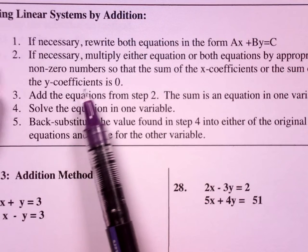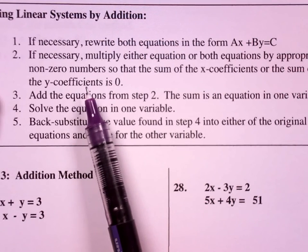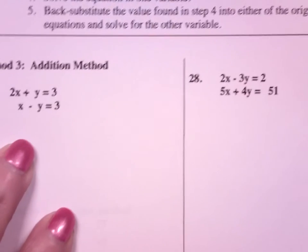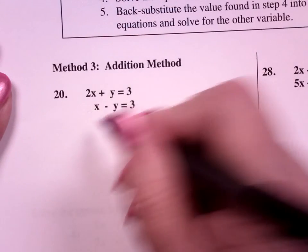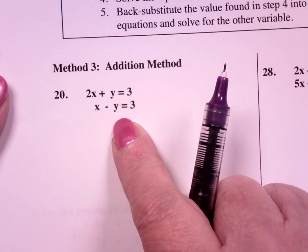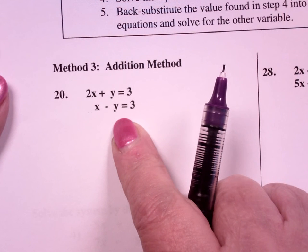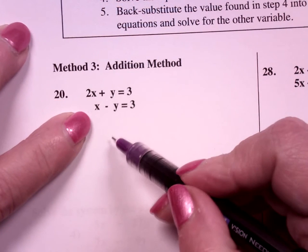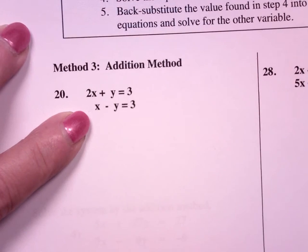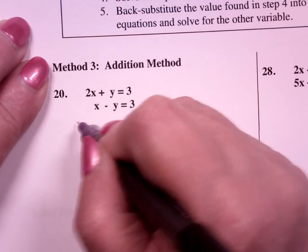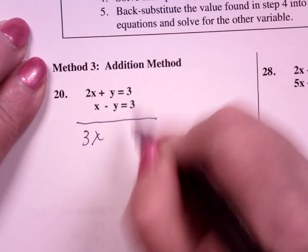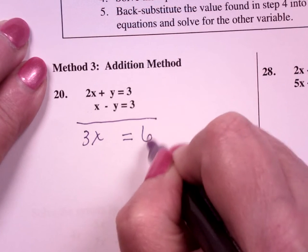What you're going to do is eliminate a variable by adding. If I look at the first one I'm going to do, if I add directly what happens? It's 3x, the y's cancel, the y's drop out. That's what the goal is. The addition method kills a variable. So I'm just going to add directly, and this gives me 3x, the y's drop out, equals 6.